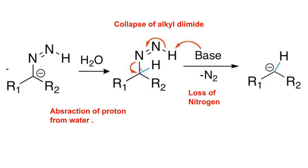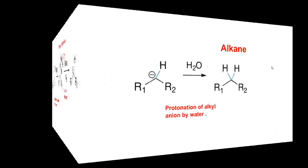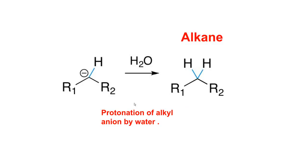The bond shifts between the two nitrogens, breaking the carbon-nitrogen bond, and the electrons collapse onto the carbon atom. As a result, nitrogen gas bubbles out of the solution, making the reaction irreversible. The negative charge now resides on carbon. Another deprotonation of water occurs — a second hydrogen is extracted from water and attaches to this carbon — forming the resulting alkane. This completes the full mechanism of the Wolf-Kishner reduction.